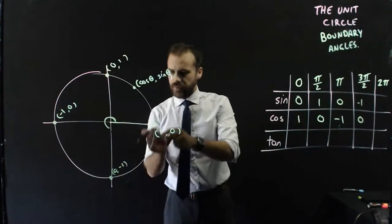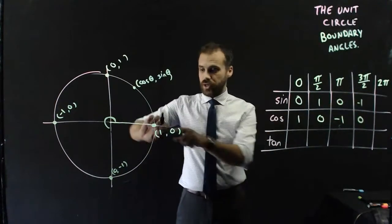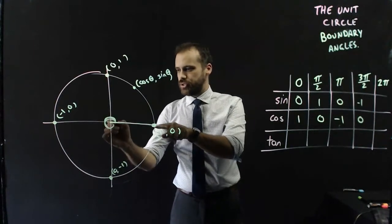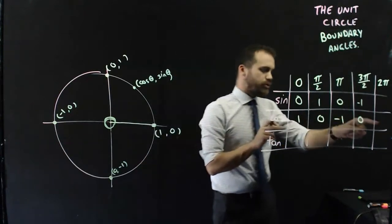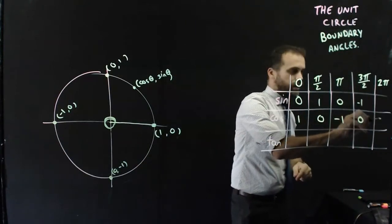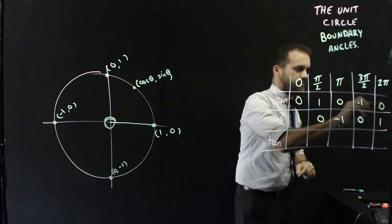And finally, if we come back to the start, which is 2 pi, so we're at 0, we've gone all the way around the circle, which is now 2 pi, we're back to where we began. Cos of 2 pi is 1, and sine of 2 pi is 0.